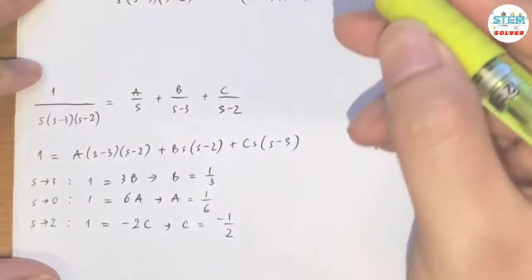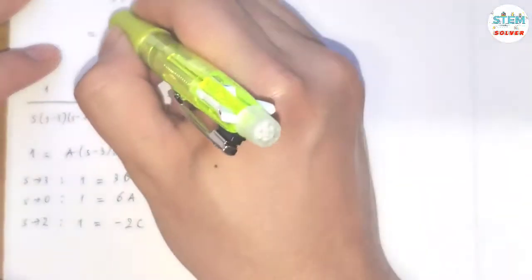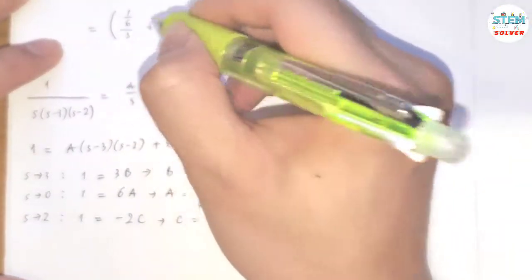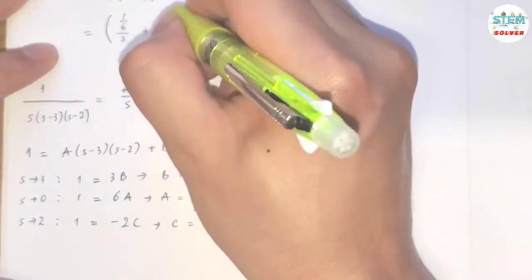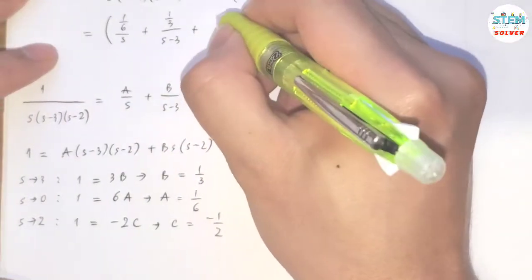Now go back to this one. This gives me a over s, which is 1/6 over s, b over s minus 3, b is 1/3, c over s minus 2, c is negative 1/2.